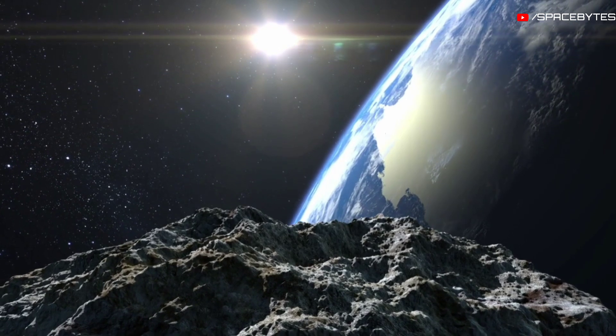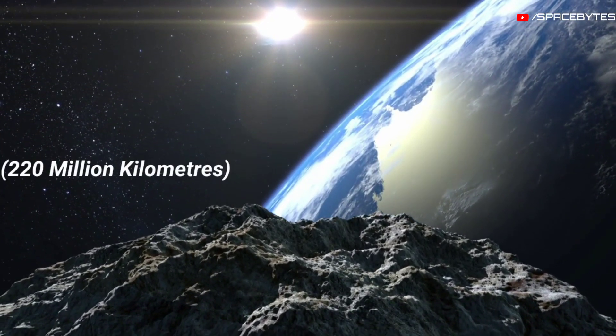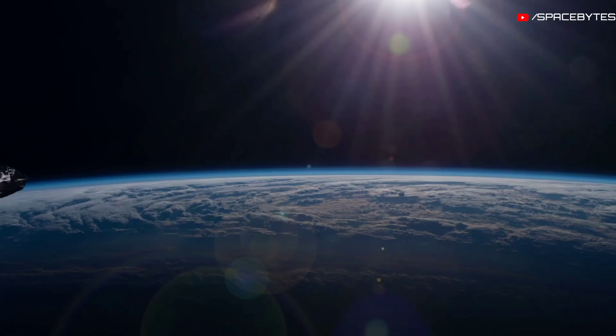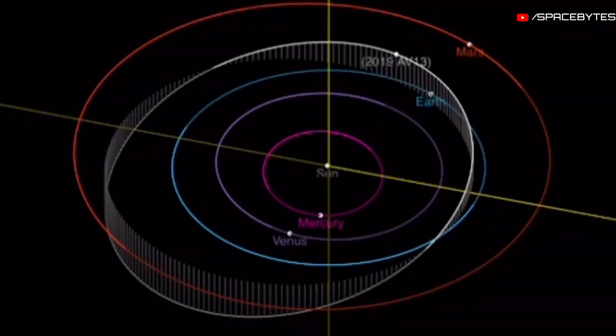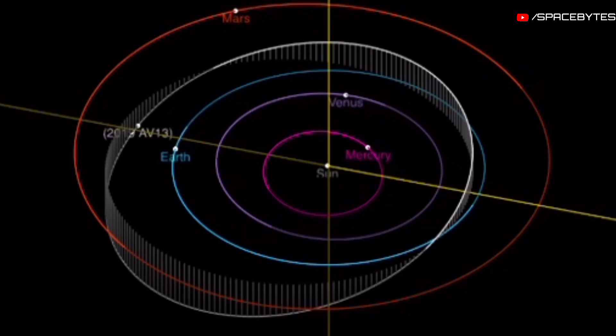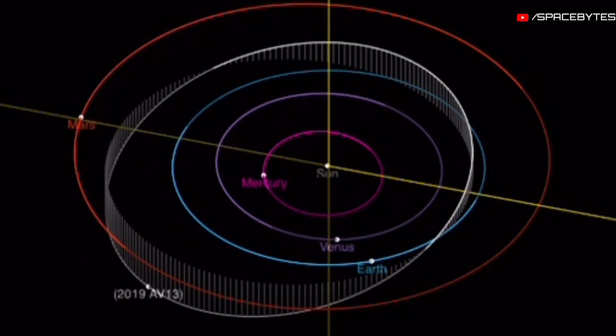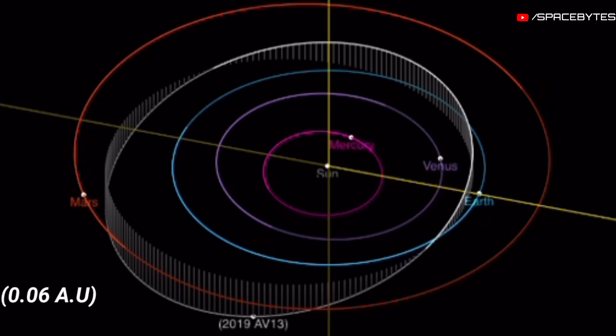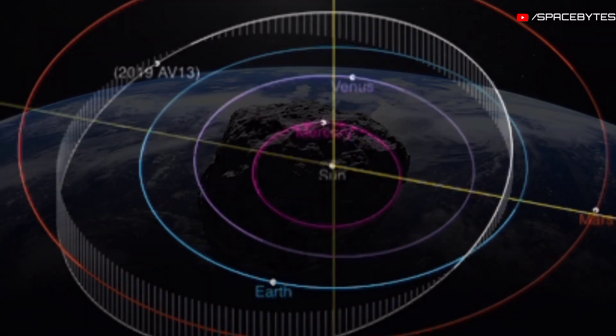At this time, the asteroid moves away from the Sun at a maximum distance of 220 million kilometers and approaches it at a minimum distance of 140 million kilometers. The distance of asteroid 2019 AV-13 from Earth is currently 8.38 million kilometers, equivalent to 0.06 astronomical units. Light takes 27 seconds to travel from the asteroid to us.